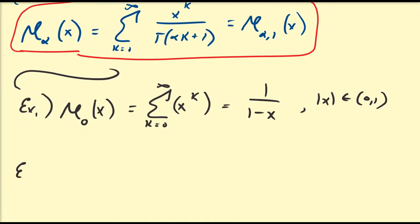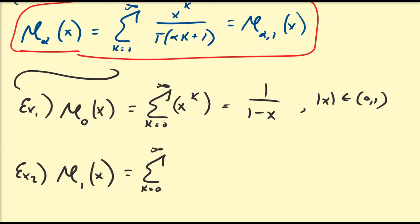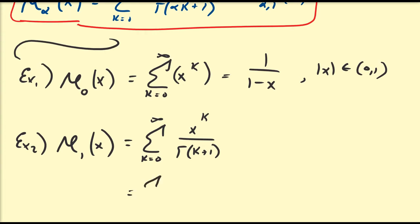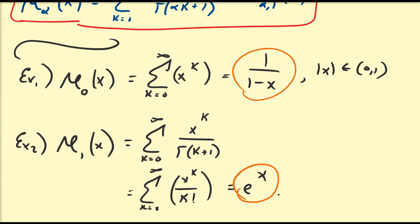Let's consider E_1(x). This is going to be equal to the sum from k equals zero to infinity of x^k all divided by gamma(k+1). We know that gamma(k+1) equals k factorial. This power series should look familiar — this is just the exponential function e^x. So already we have a rational function and an exponential function.